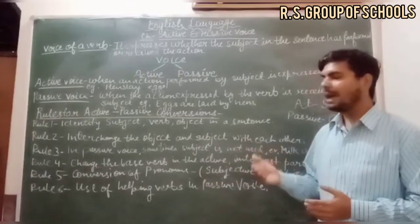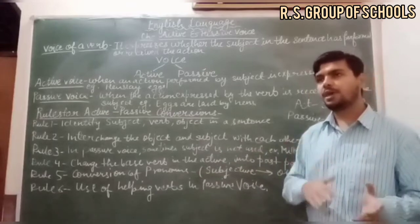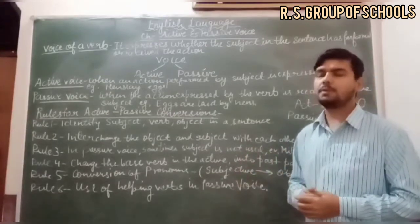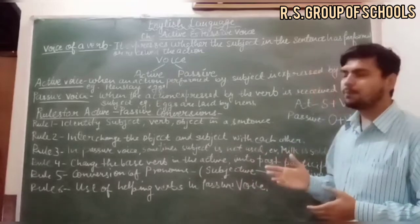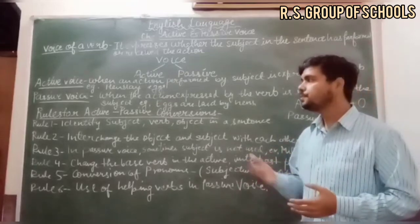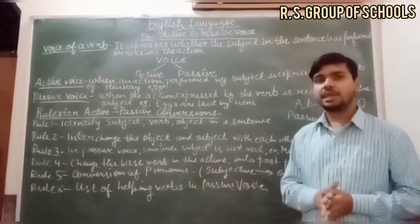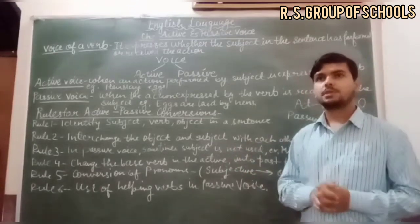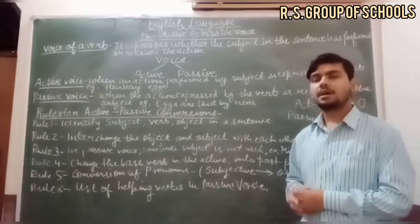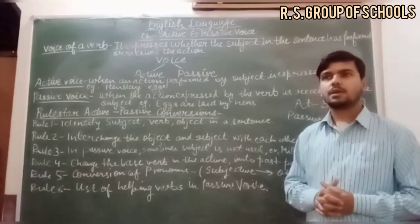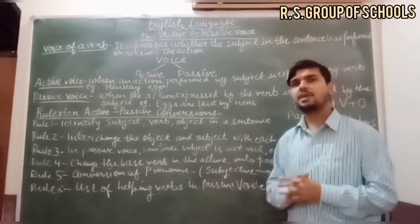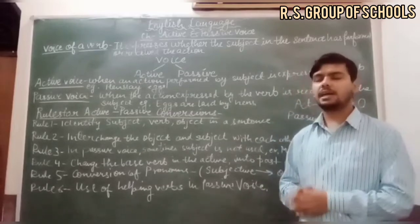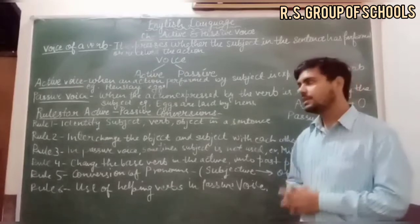In passive voice, the subject pronoun becomes an object pronoun. For example: 'he' changes to 'him', 'she' changes to 'her', 'it' stays 'it', 'you' stays 'you', 'I' becomes 'me', 'we' becomes 'us', and 'they' becomes 'them.'